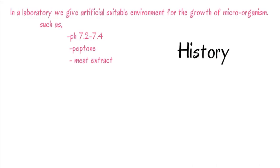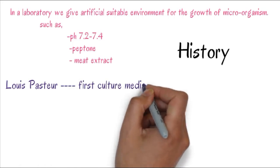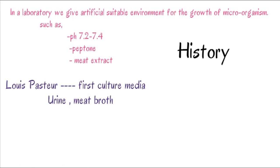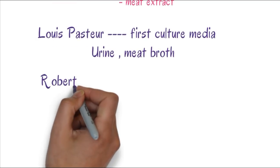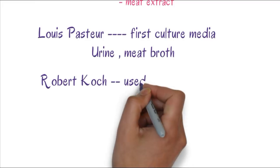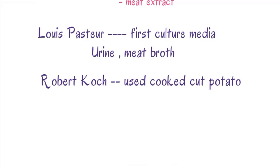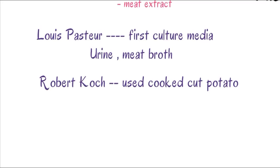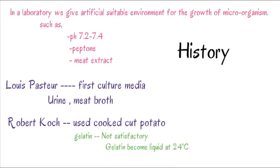First liquid culture media was invented by Louis Pasteur, father of microbiology, using urine and meat broth. After some time, Robert Koch, father of bacteriology, used cooked cut potato for solidification of the media. He also used gelatin, which was not satisfactory because gelatin becomes liquid at 24 degrees Celsius, and we grow bacteria at 37 degrees Celsius.